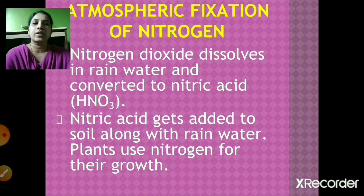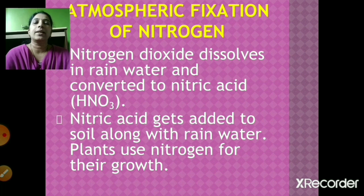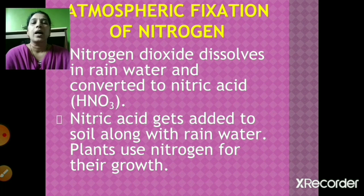To summarize atmospheric fixation: when lightning occurs, atmospheric nitrogen reacts with oxygen to form nitric oxide, which oxidizes to form nitrogen dioxide. Nitrogen dioxide dissolves in rainwater and gets converted into nitric acid, which is added to the soil, and plants can then use this nitrogen for their growth.